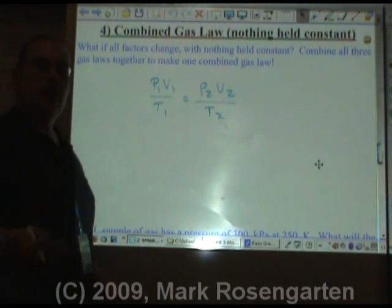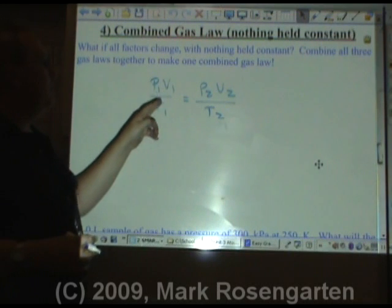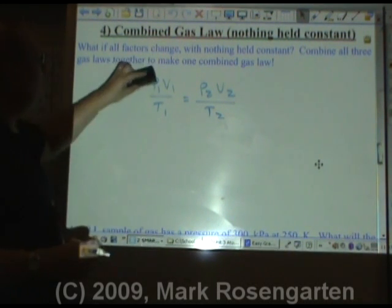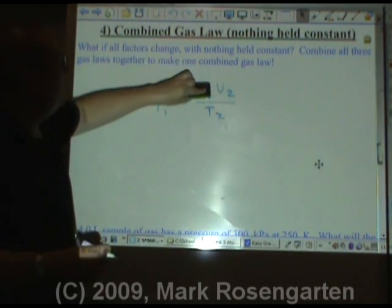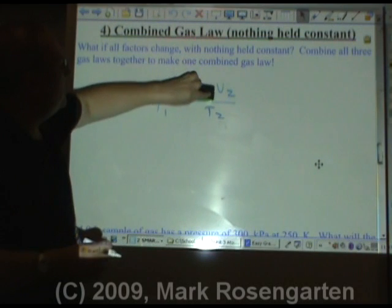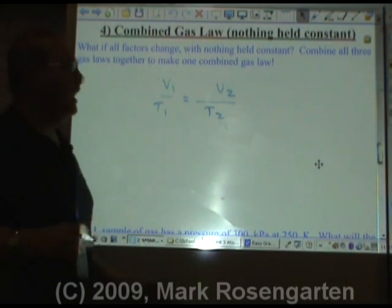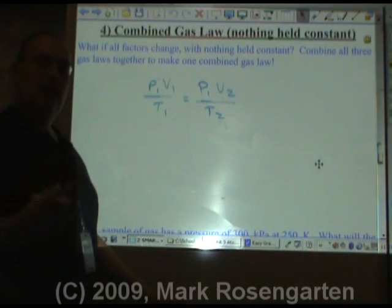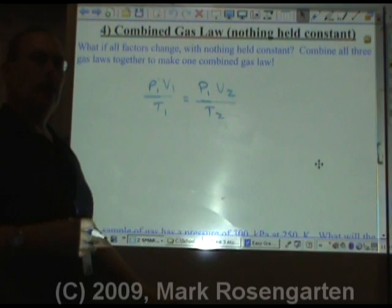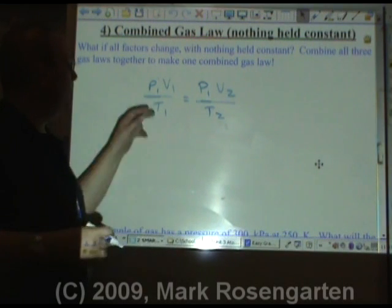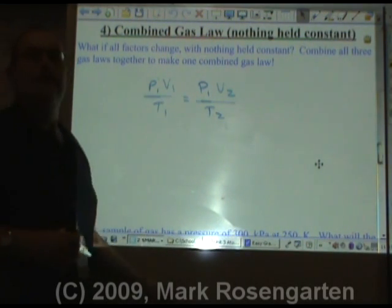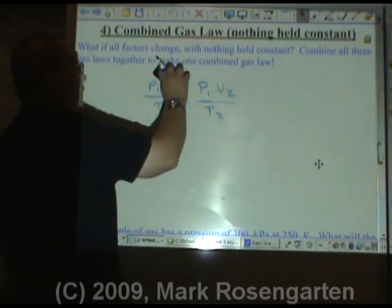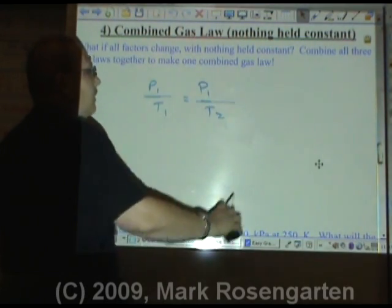If you have Charles' law, it's a relationship between volume and temperature, and pressure is held constant, therefore you can ignore it, because it would just simply cancel out, and you get Charles' law. In Gay-Lussac's law, it's a relationship between pressure and temperature. Volume remains constant, therefore you can cancel it out.